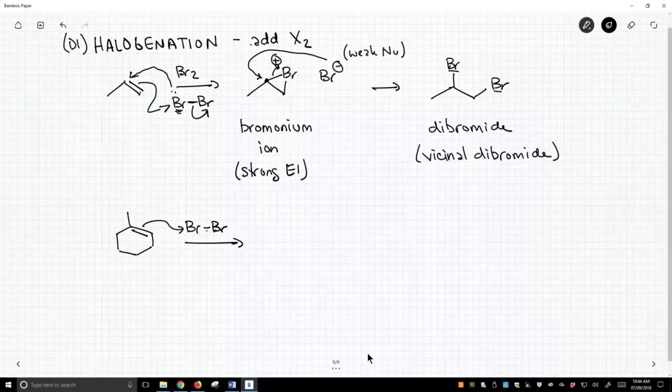The alkene attacks. We break the Br-Br bond and our lone pair on bromine turns around and attacks the alkene. And I'm going to assume the Br2 attacks from the top face. So our two bonds to bromine are also going to be on the top face.